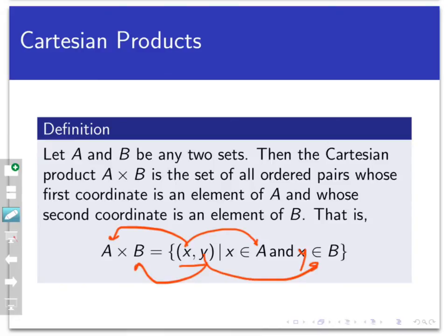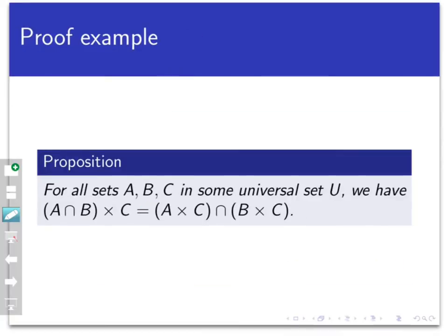Just like you learned back in Algebra 1, except now we're using general sets that could contain any sort of objects whatsoever. So let's work on this proposition here that says: for all sets A, B, and C inside a universal set U, we have A intersect B cross C equal to A cross C intersect B cross C. So this Cartesian product that involves an intersection equals the intersection of two Cartesian products.